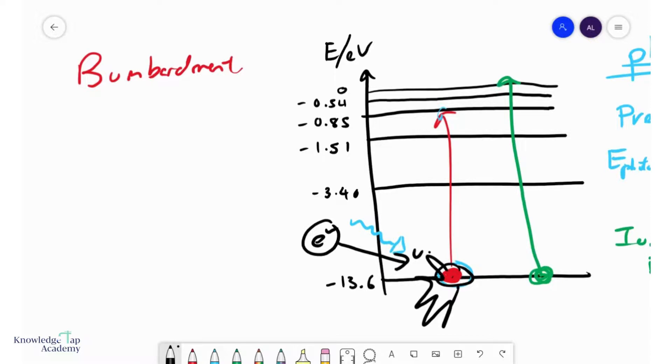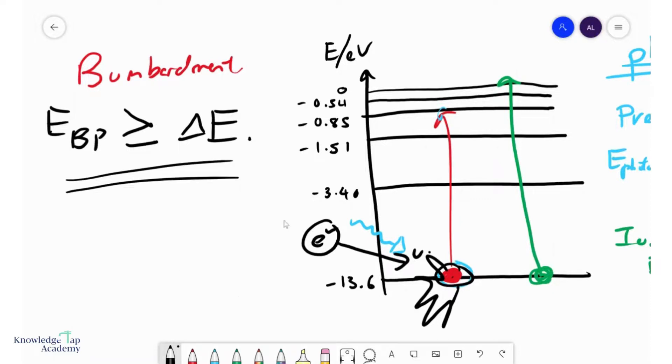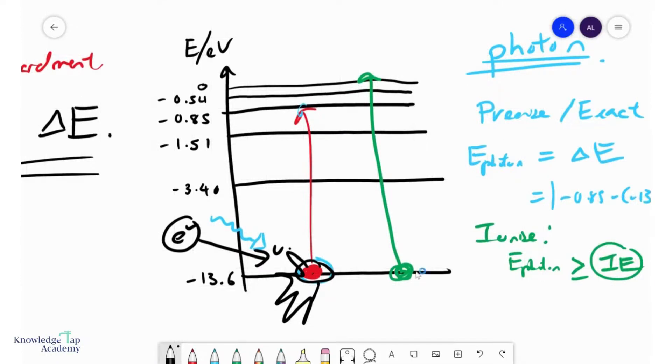And in this case, the energy of the bombarding particle simply needs to be greater than or equal to the energy difference between the levels. And so this is a little bit easier to achieve than exciting through photon absorption.